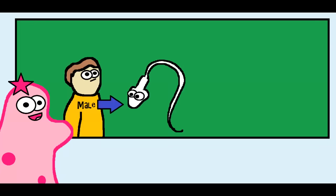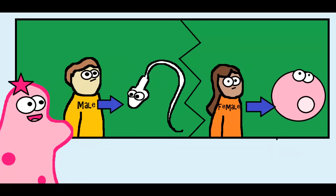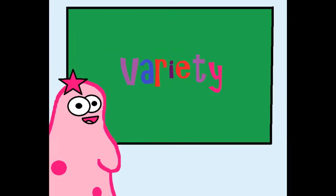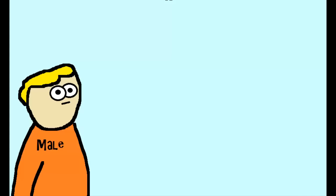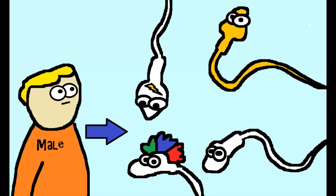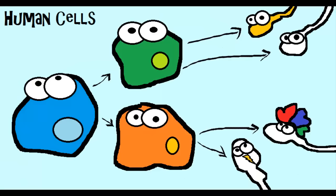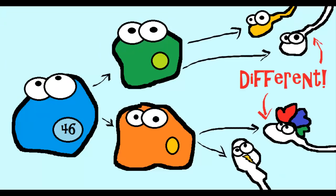Meiosis is designed in males to produce sperm cells and in females to produce egg cells. Because of independent assortment and crossing over, there is variety — the four sperm cells produced each time are all different from each other. They're also different from the original starting cell, which had 46 chromosomes, while the ending sperm cells only have 23 chromosomes. So they are not identical to the original, and not identical to each other — that contributes to variety.